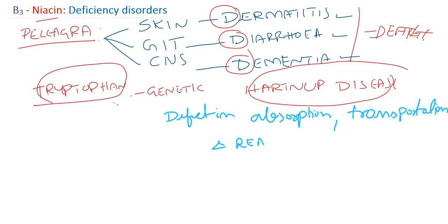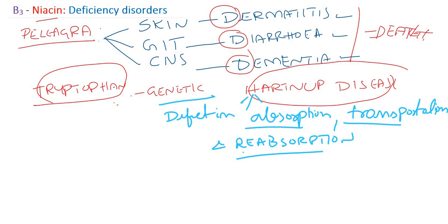There may also be a defect in reabsorption of tryptophan in the kidney tubule. Whatever amino acids are filtered in Bowman's capsule are normally reabsorbed, but a genetic defect in tryptophan absorption, transportation, or reabsorption leads to Hartnup disease. So even if a person takes sufficient dietary niacin, they can suffer from pellagra due to this genetic disorder.